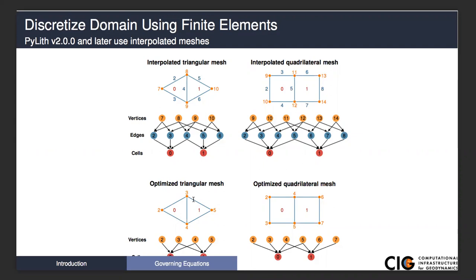Within PyLith, instead of just keeping track of the triangles and nodes, we actually keep track of the triangles, the edges of those triangles, and the vertices. In 3D, we keep track of the solid 3D cell, the faces of that cell, the edges on those faces, and then the vertices on those edges.